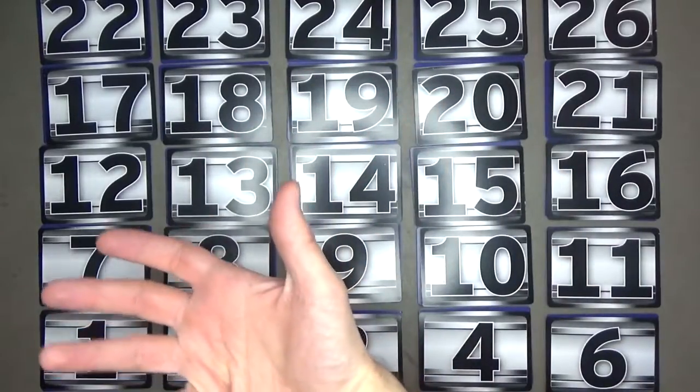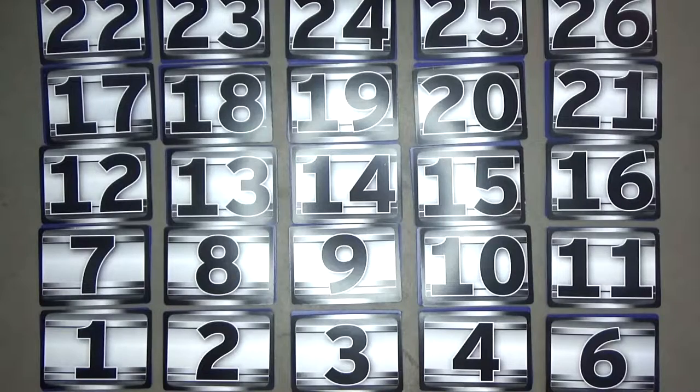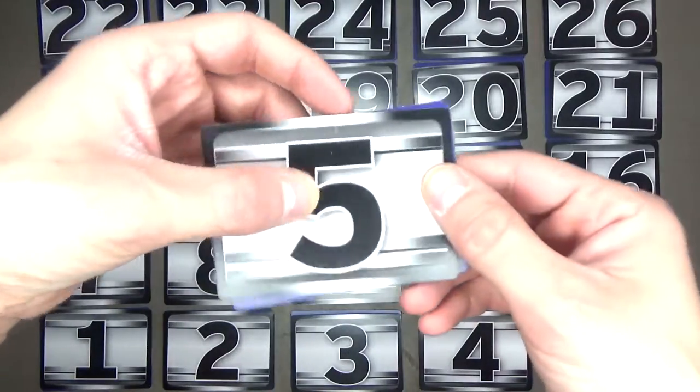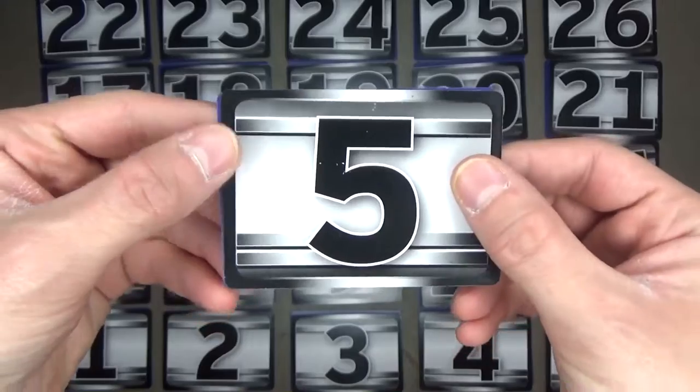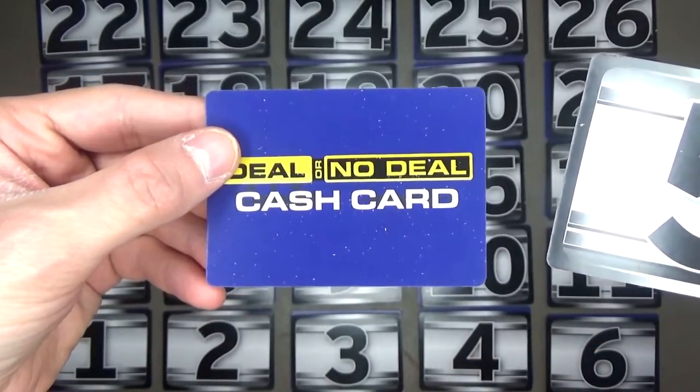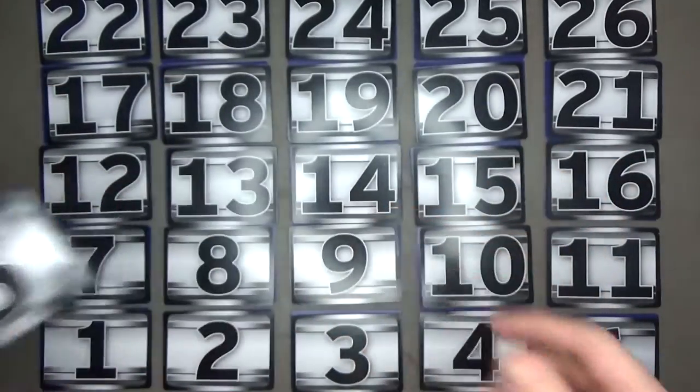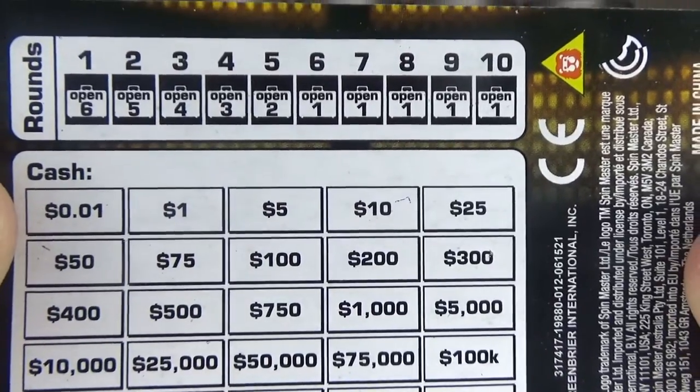For this video, I'm going to play along as the contestant and the host at the same time. So this is what the field looks like with all of the briefcases laid on top of the cash cards. At this point, the contestant chooses any one of the briefcases of its choice and keeps it for the game. Now if you noticed, the five is missing. That's because I went ahead and chose the number five for this game. When you choose a briefcase, do not look at the amount on the cash card. It's best for you just to give this to the host so that you don't cheat. Now let's play the game.